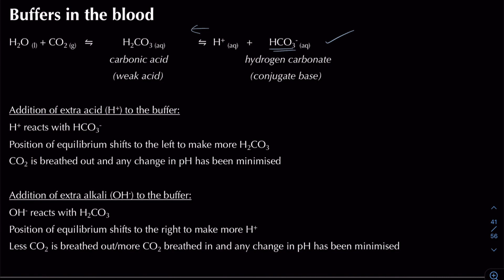If we add extra alkali to our buffer, the OH− ions react with carbonic acid, shifting the equilibrium to the right, producing more H+ and hydrogen carbonate. Overall we breathe less CO₂ out and breathe more CO₂ in, and any change in pH has been minimized.